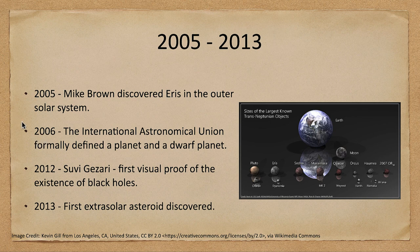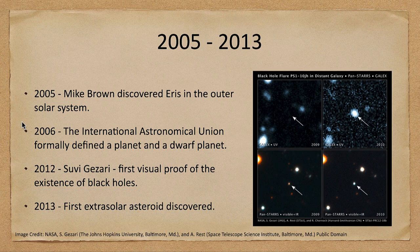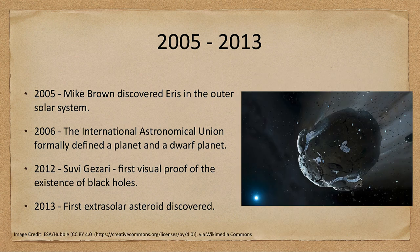On the topic of black holes, we had growing detections and determinations that black holes existed, including one of the first pieces of visual evidence — a flare around a black hole — giving us more detailed understanding of how black holes occur. And in 2013, an extrasolar asteroid was detected — an asteroid not part of our solar system, but from another solar system that traveled into ours, ejected from its system just as material is ejected from our own solar system when it formed.